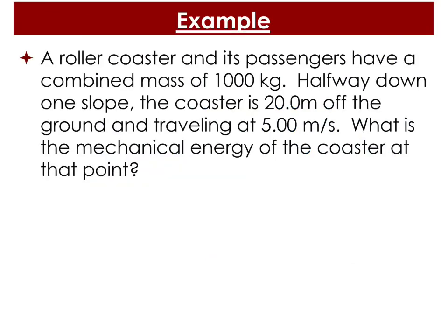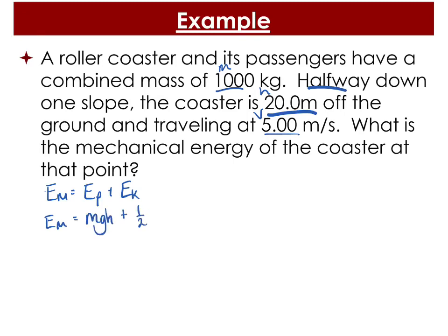Let's go over an example. A roller coaster and its passengers have a combined mass of 1,000 kilograms. Halfway down one slope, the coaster is 20 meters off the ground, traveling at 5 meters per second. We want the total mechanical energy at this point. Mechanical energy equals potential energy plus kinetic energy. We have mass, height, and velocity, so we can calculate both: potential energy is mgh and kinetic energy is one-half mv squared.